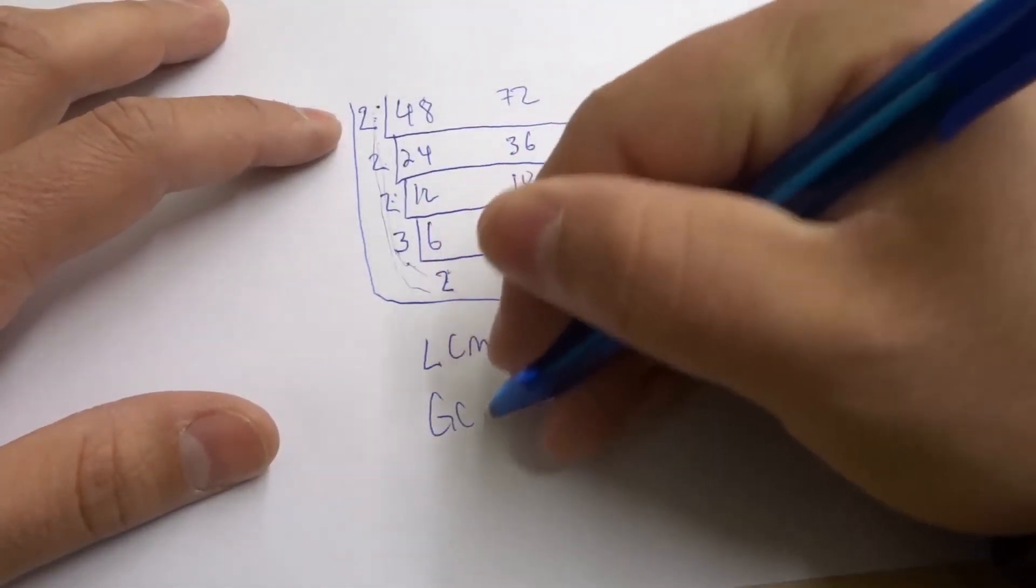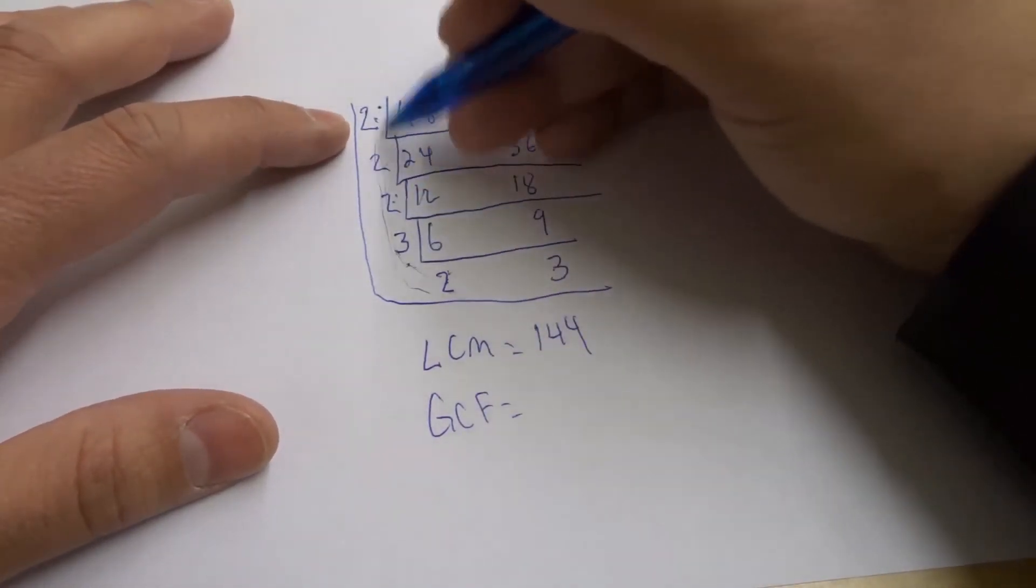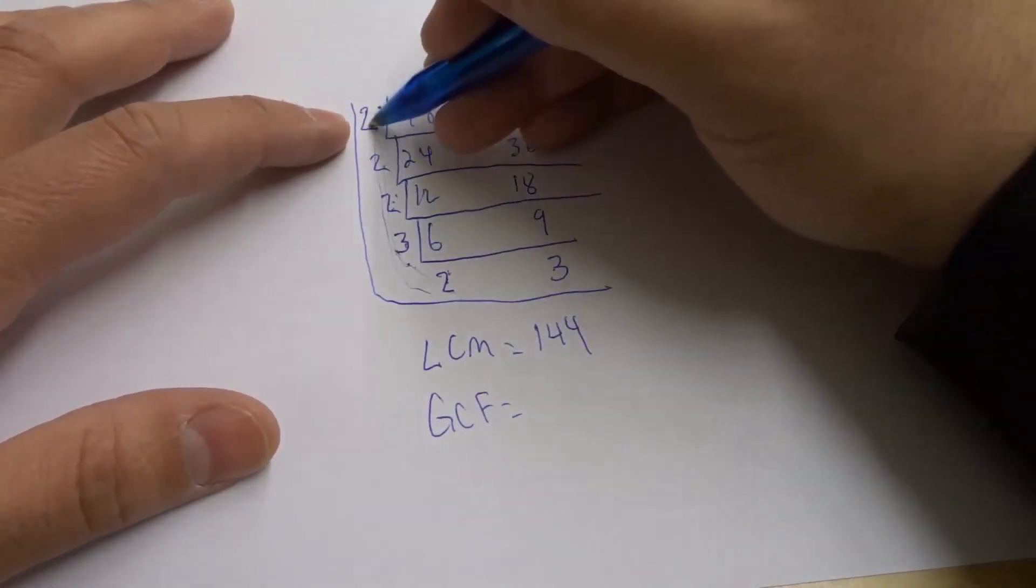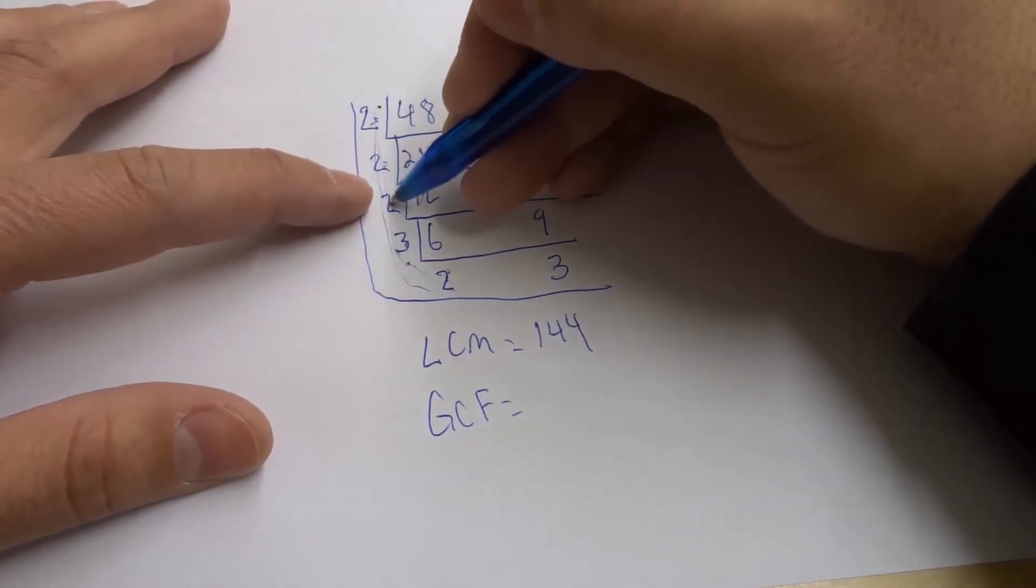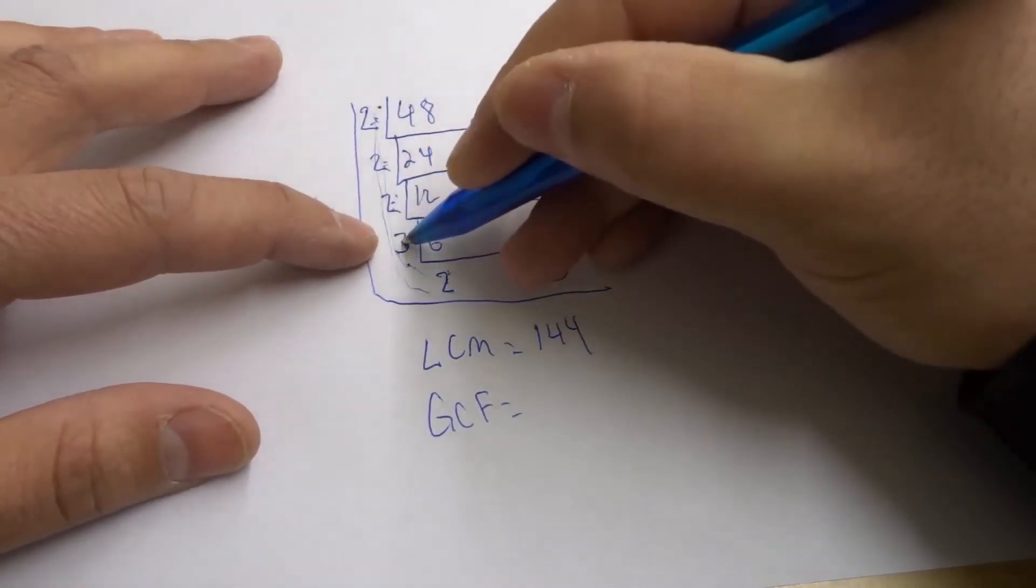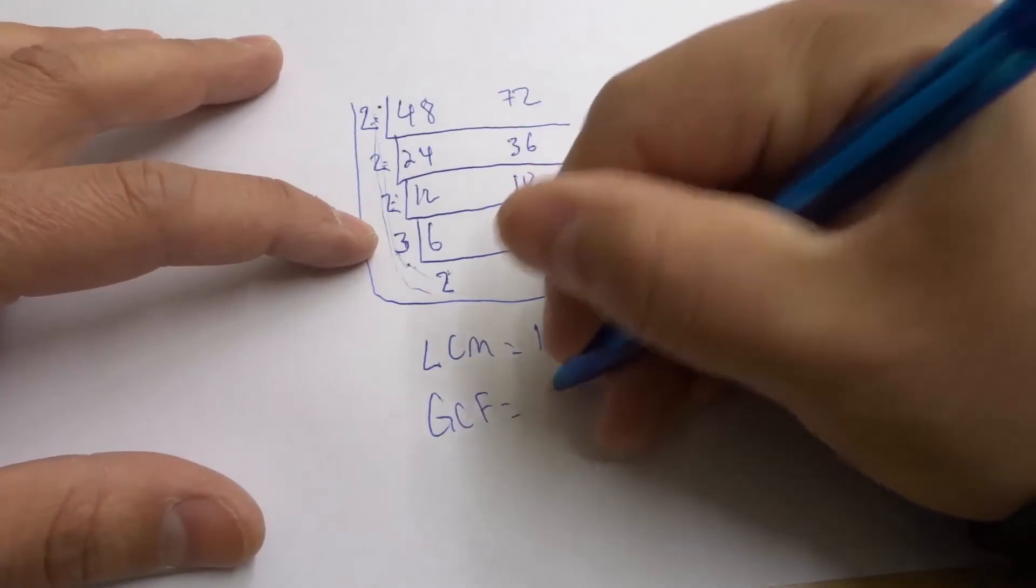So let's just write that down. GCF equals, and that would be all these. So 2 times 2 times 2 times 3. So 2 times 2 is 4 times 2 is 8 times 3 is 24. So our GCF is going to be 24.